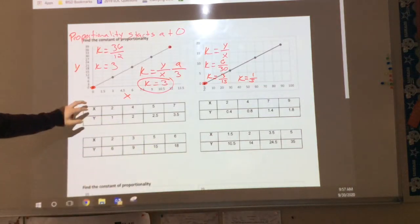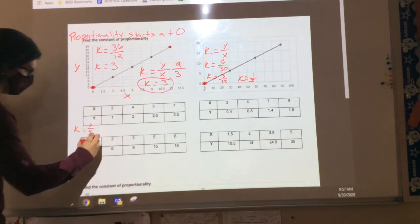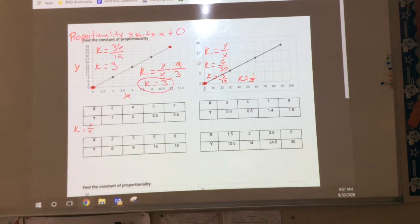Let's look at the table now. I got my x and my y's here, right? The formula, once again, is k equals y divided by x. k equals y divided by x.